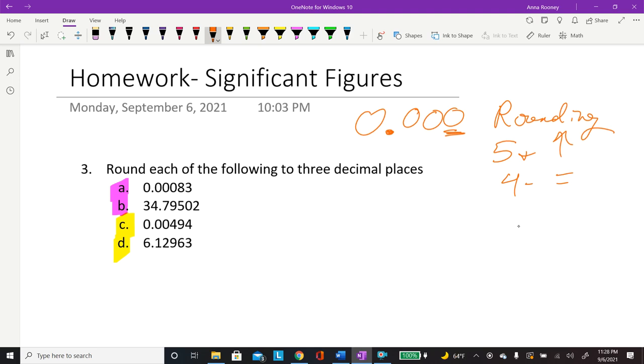For this, oh actually this one, number C, we'll start that one. For this one, 4 is in that third decimal place: 1, 2, 3. The number next to it is actually a 9, and so that is 5 or above. So you would go 0.005.